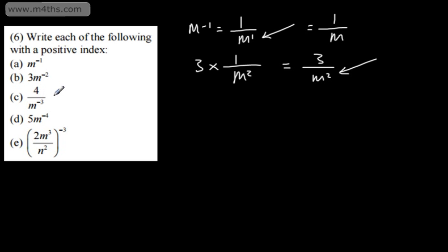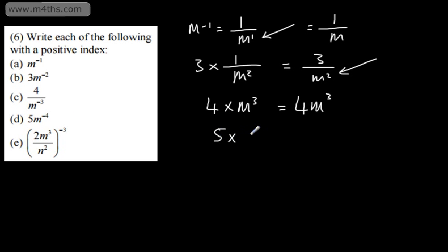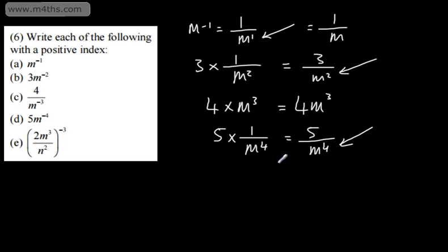If it's 4 over m to the negative 3, we can simply write that this is going to be 4 times m to the positive 3, which of course we can simplify by writing 4m to the positive 3. The next one: 5m to the negative 4. This is simply saying 5 times 1 over m to the 4. Don't get drawn into writing this as 1 over 5m — the 5 doesn't have a negative power. So we could simply write this as 5 over m to the power of positive 4. Again, we've got a positive index.